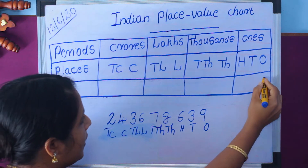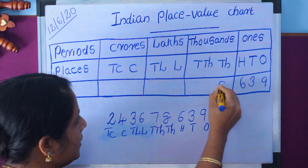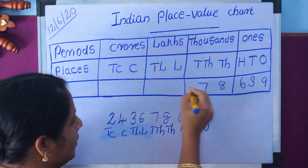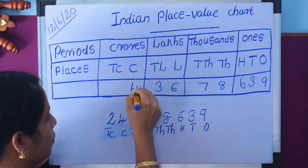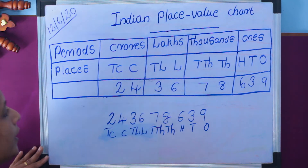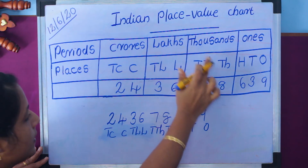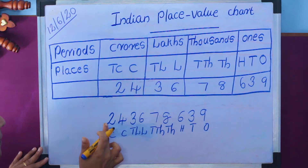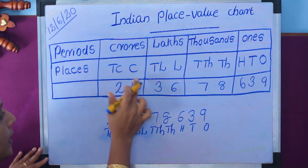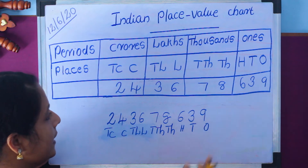Writing the digits from right to left in the table: 9, 3, 6, 8, 7, 6, 3, 4, 2. So we read this number as 24 crore, 36 lakh, 78,639.